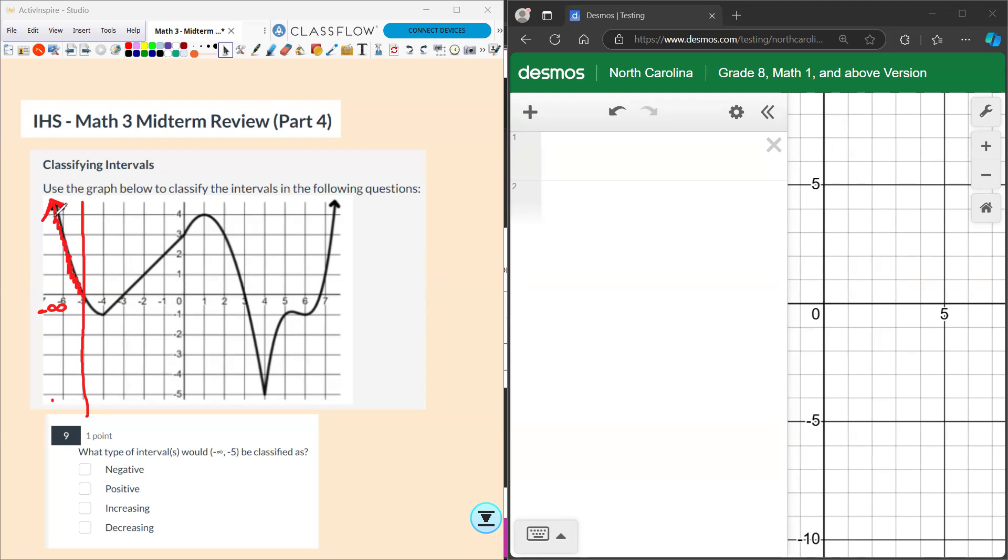Now that arrow is deceiving, isn't it? Because really we're looking at what the graph is doing as it goes to the right, not to the left. So this is going to be still decreasing, but you'll also notice that this graph is actually above the x-axis.